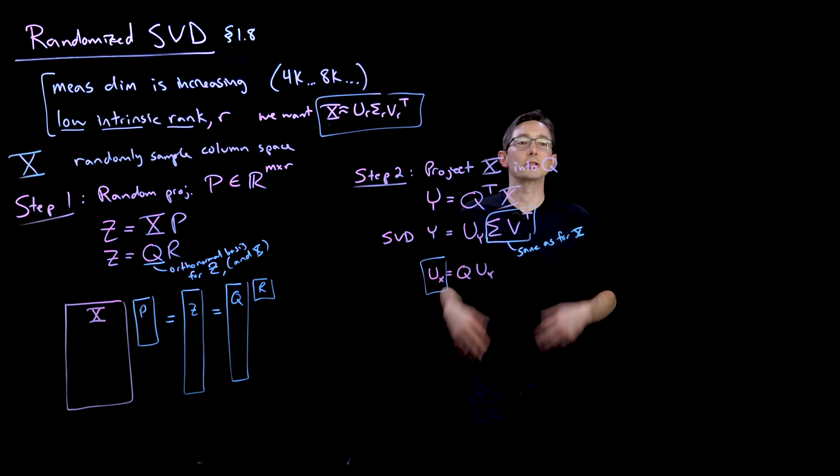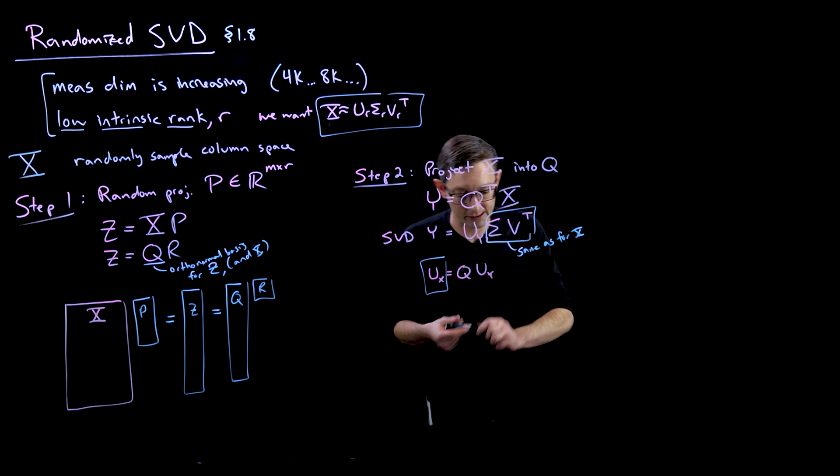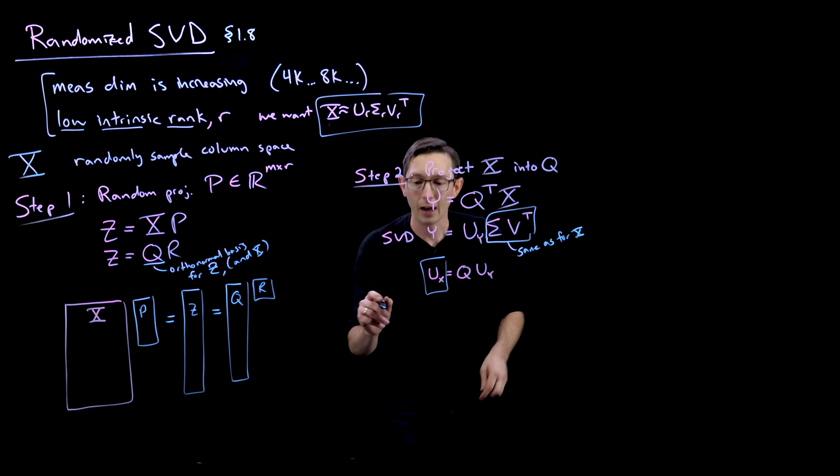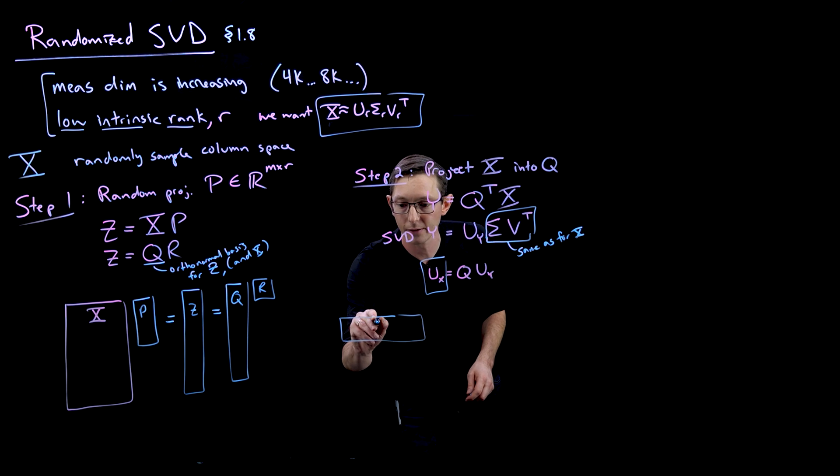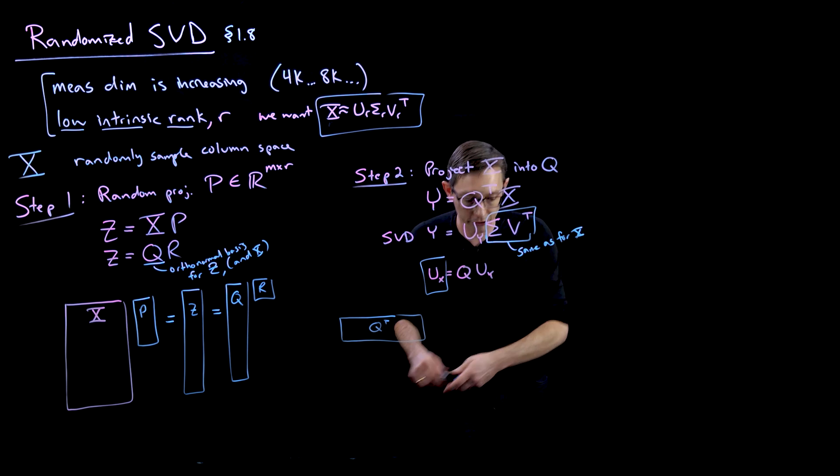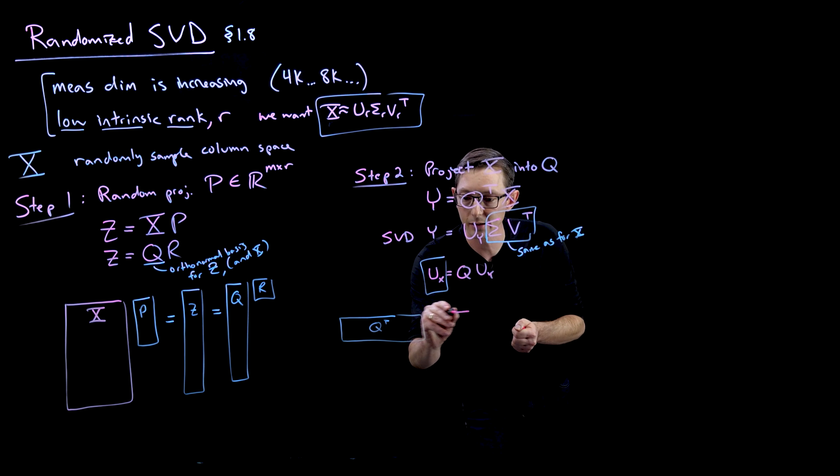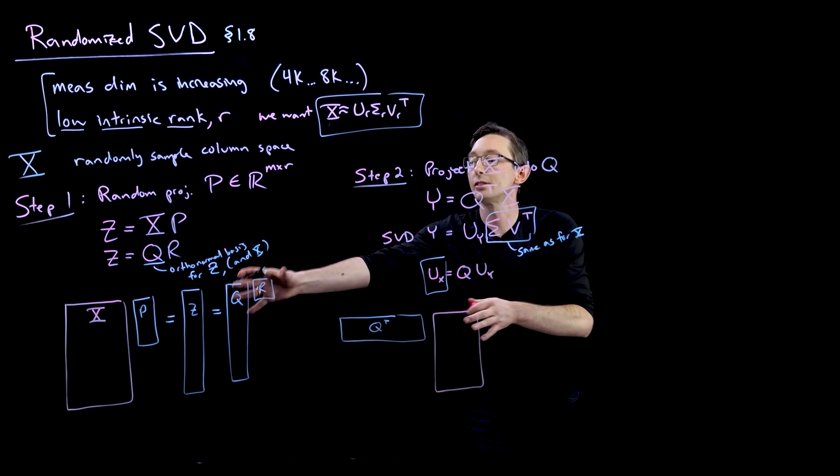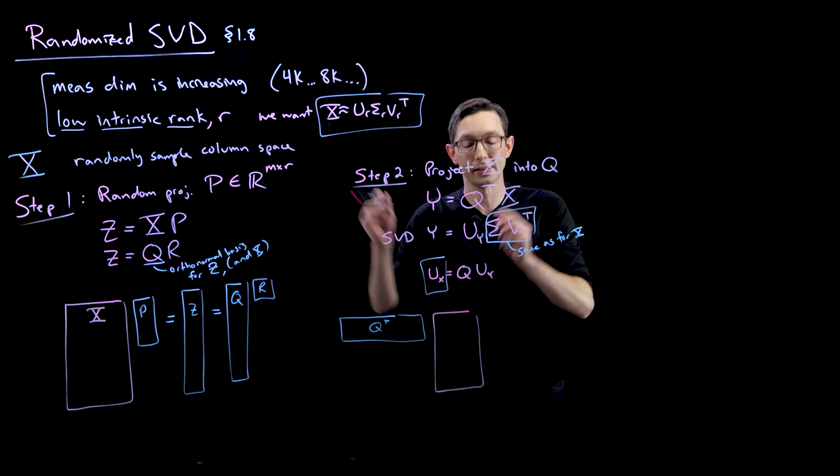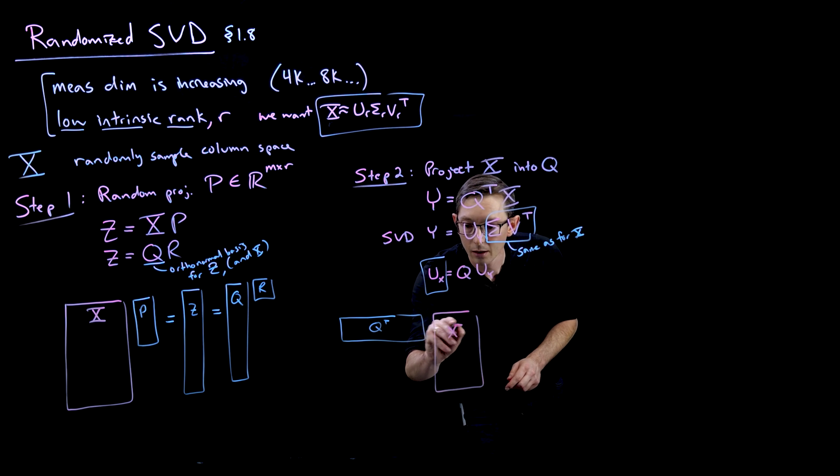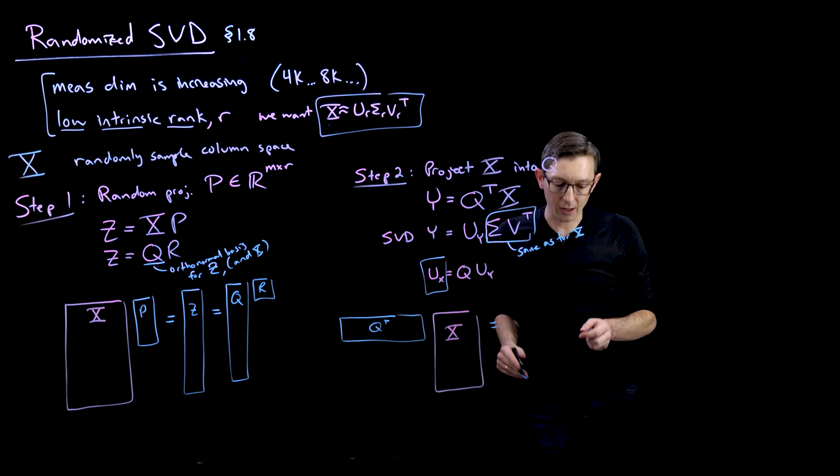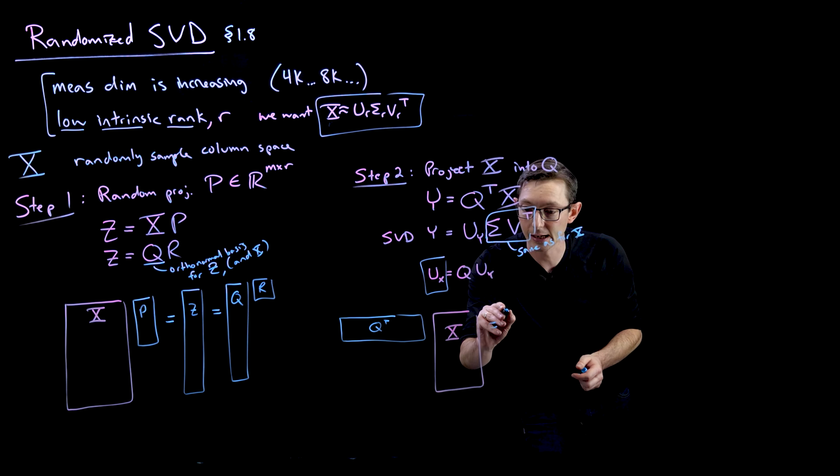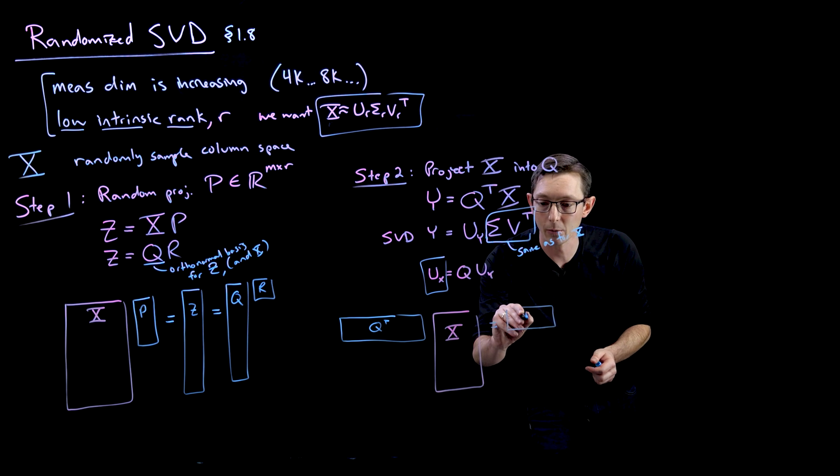And again, we can write this kind of pictorially in terms of matrices in the following way. So now I take my Q transpose, the skinny Q transpose matrix, and I multiply that by my big X matrix. And again, this is all still less expensive than computing the SVD of X directly.